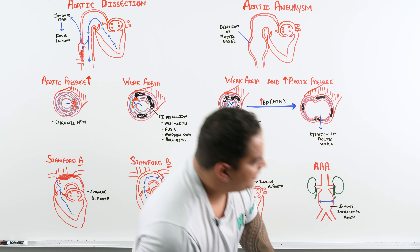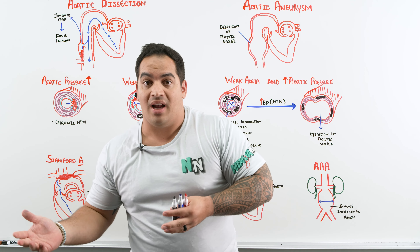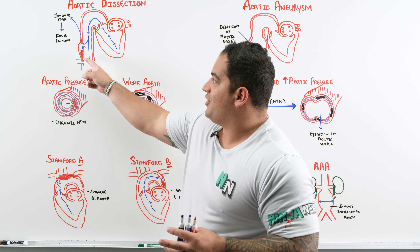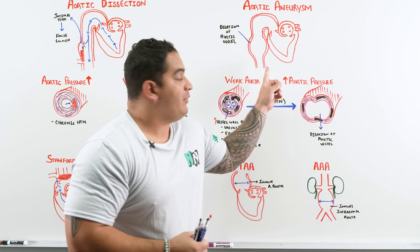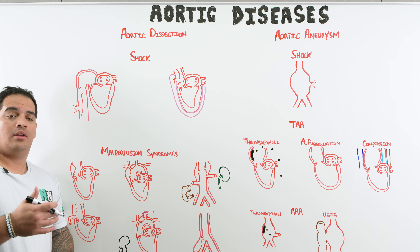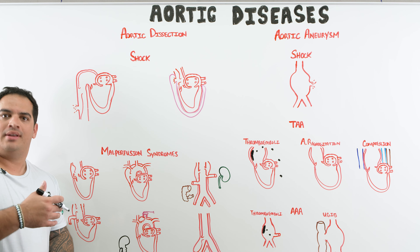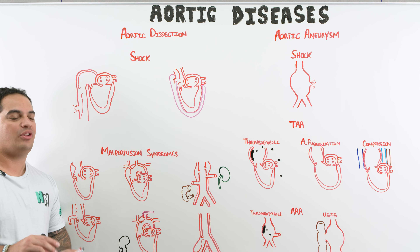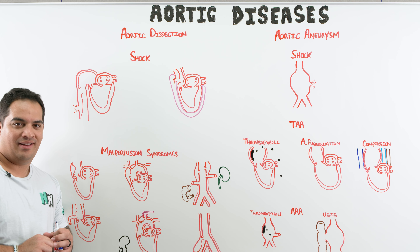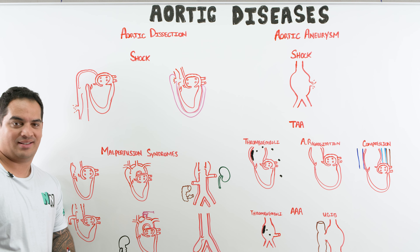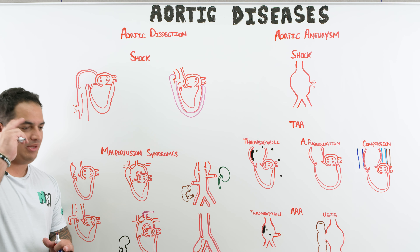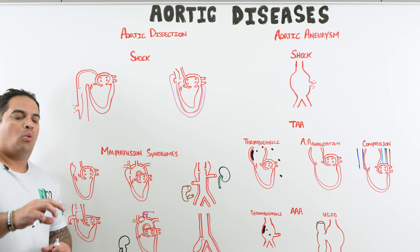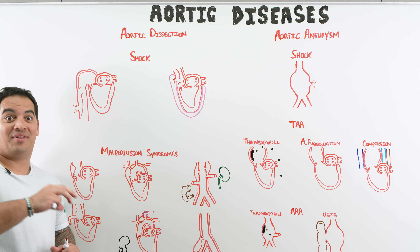Now we understand the pathophysiology, causes, and classification of aortic dissections and aneurysms. Let's cover complications. When a patient comes in with an aortic dissection, the classic finding — and you need to know this for your boards — is ripping, tearing chest pain. That should be ingrained in your brain.